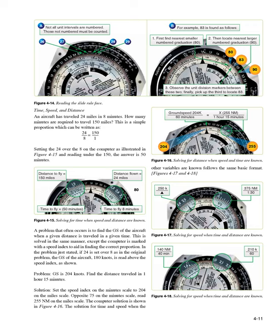In the problem just stated, if 24 is set over 8 as in the original problem, the GS of the aircraft — 180 knots — is read above the speed index. Problem: GS is 204 knots. Find the distance traveled in 1 hour 15 minutes. Solution: set the speed index on the minutes scale to 204 on the miles scale. Opposite 75 on the minutes scale, read 255 nautical miles on the miles scale. The computer solution is shown in Figure 4-16. Figures 4-17 and 4-18 show solutions for time and speed.